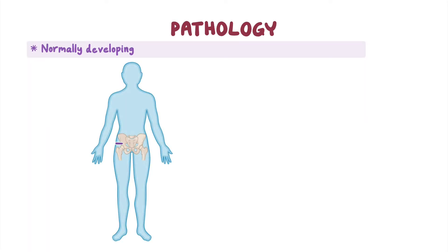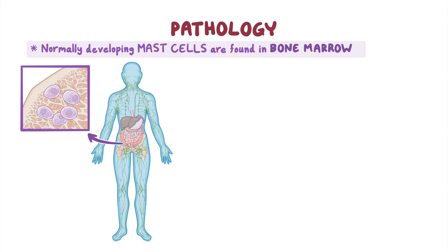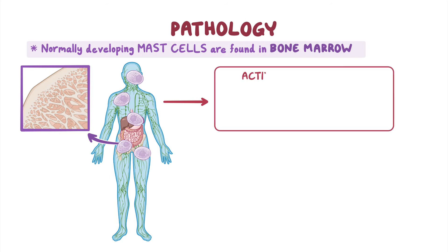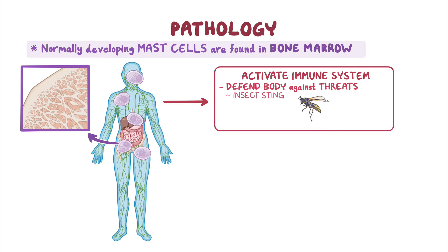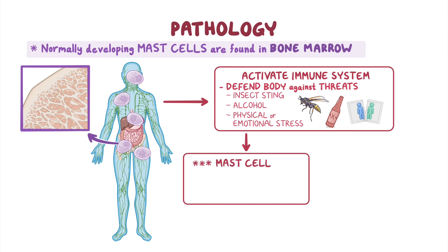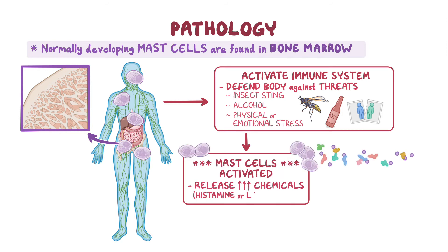Normally developing mast cells are found in the bone marrow, and as they mature, they leave the bone marrow and sit in tissues around the body. There they have an important role in activating the immune system to defend the body against a threat, such as an insect sting, alcohol, or physical or emotional stress. When a threat triggers a response, mast cells become activated and release a large amount of chemicals, like histamine or leukotrienes, into the surrounding tissue. These chemicals lead to a specific immune system response called an allergic reaction.